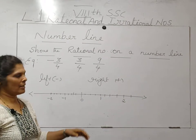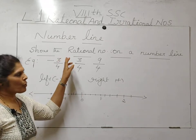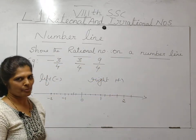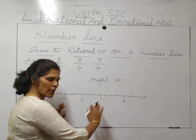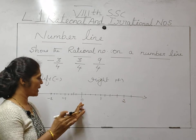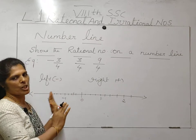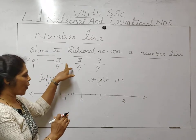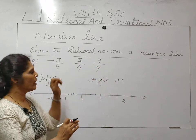Now we learn about number lines — you studied this last year too. The question given here: show the rational number on a number line. We have to mark the given numbers on a number line. Draw the number line, write zero in the middle. The right side of zero is always positive, the left side is always minus. The first point given is minus 3 upon 4, next is 3 upon 4, and next is 9 upon 4.